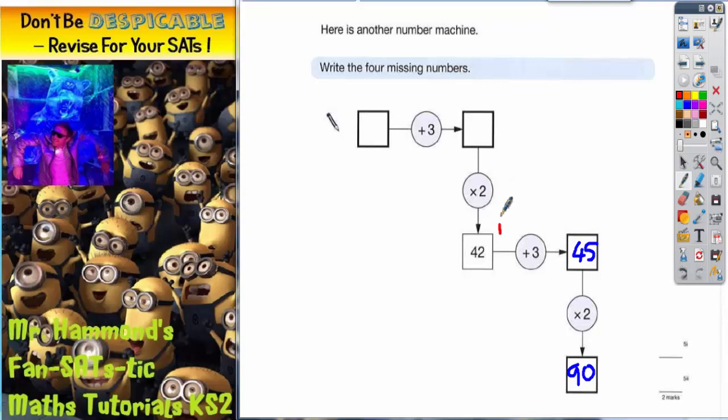The opposite of times 2 when going this way is actually divided by 2. So 42 divided by 2 going in the opposite direction is 21. This box has to be 21. Again, I've got to go in the opposite direction to what the arrow actually is. Going this way is add 3, but I need to go backwards.